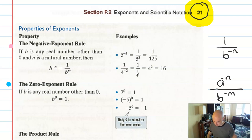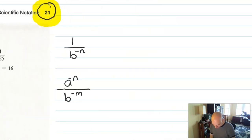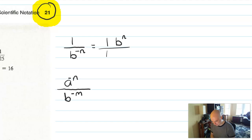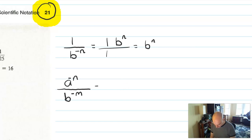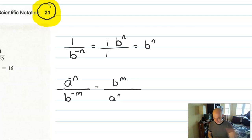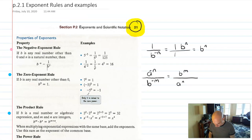The negative exponent rule shows up all the time, and there are two consequences also worth knowing. If you have a fraction with some number to a negative exponent on the bottom, that can be rewritten — the b to the n moves to the top, often written as just b to the n. And if you have a fraction with a negative exponent on the top and a negative exponent on the bottom, that can be rewritten as a to the n over b to the n — each piece switches places. Those are the three ways we see the negative exponent rule.